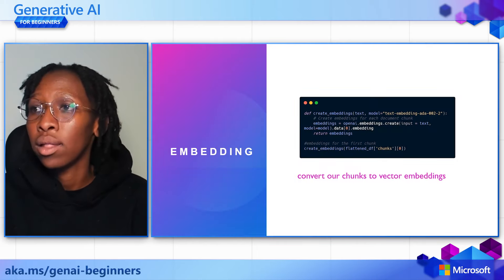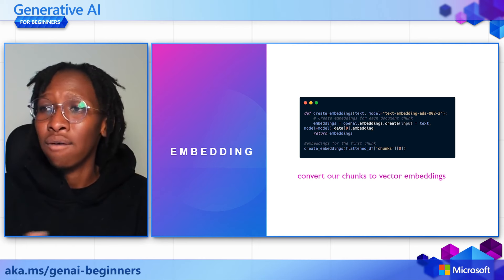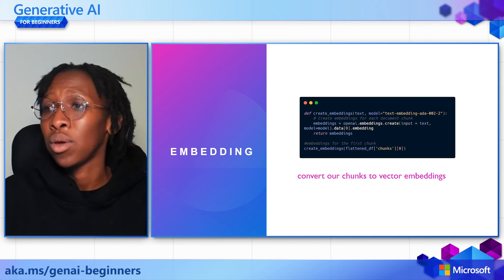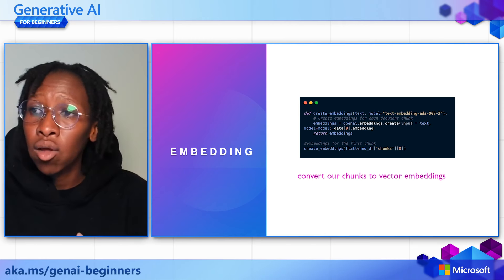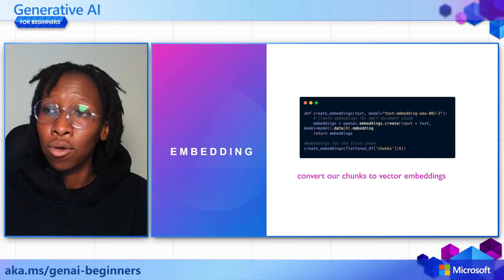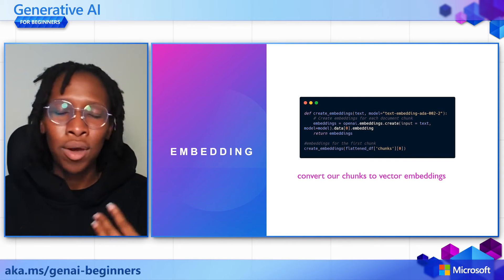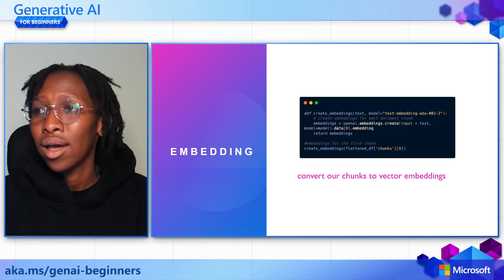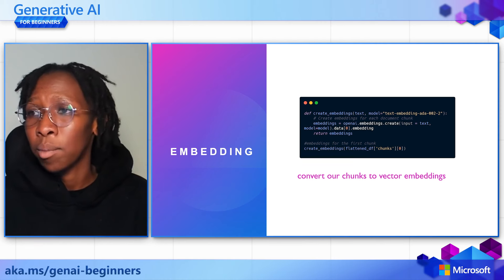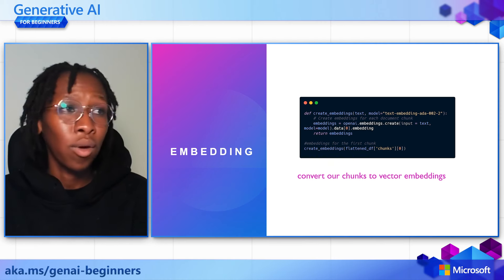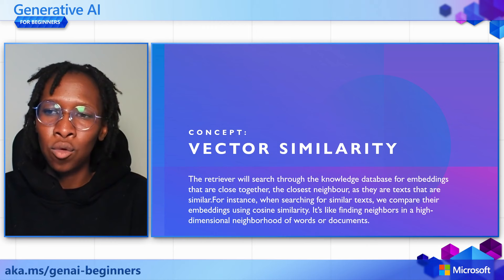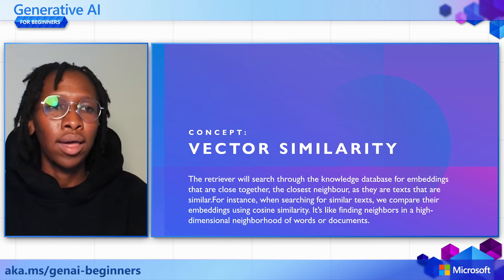Converting the chunks to embeddings enables you to have higher retrieval speed as well as being able to easily find the similarities between different chunks. In our scenario we'll be using the text-embedding-ada-002 model to embed our data. You can use other vector embeddings such as Word2Vec to do your embedding, so you can read more about the different embedding tools available and how to choose the right one for your application.